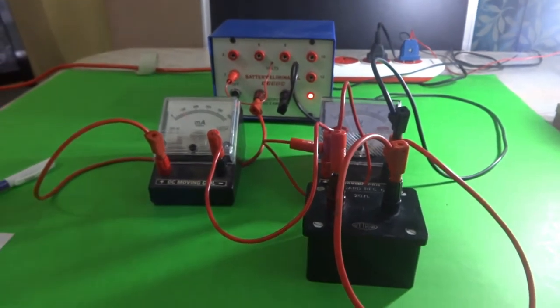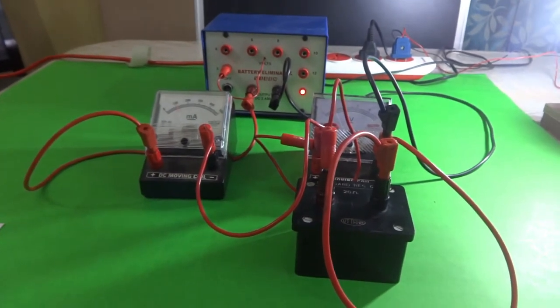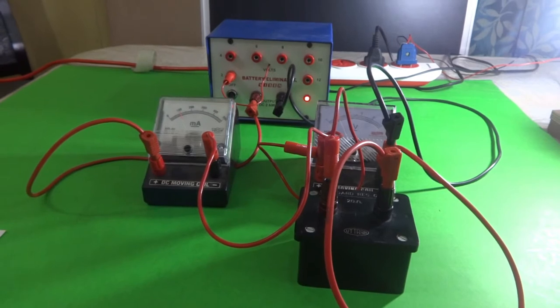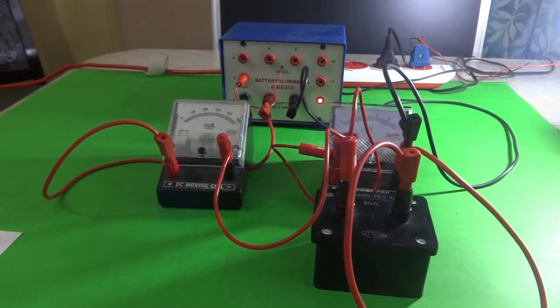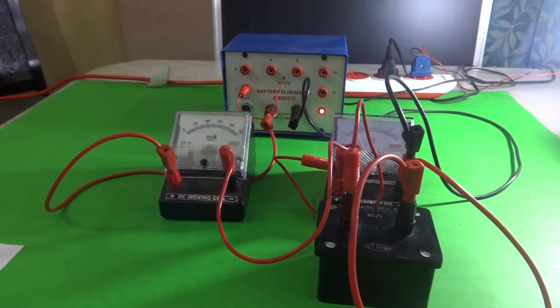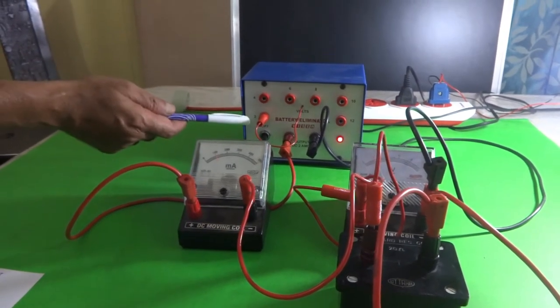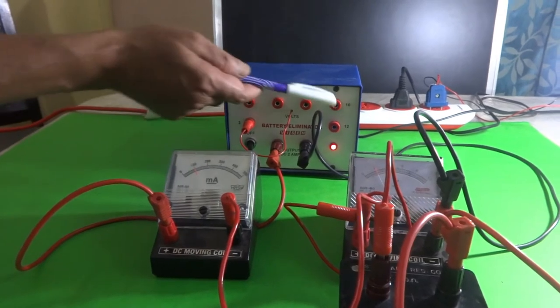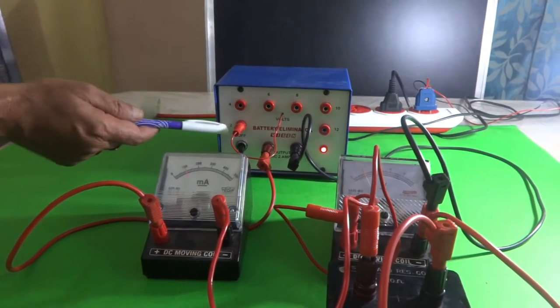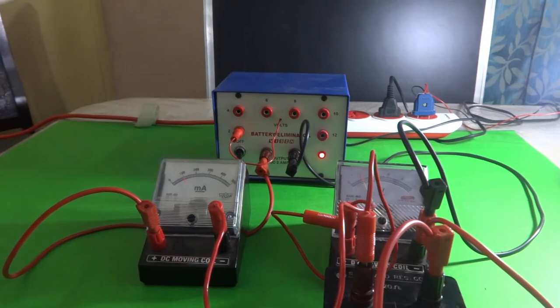Let us investigate the relation between the potential difference across the conductor and current passing through the conductor. To do this activity, I have taken one battery eliminator which is from 2 volts to 12 volts. The range of battery is 2 to 12.